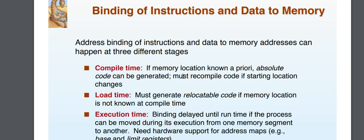To understand absolute code, we look at machine level language and memory location. Once we start the process of our program, we may need to recompile the machine level language. When you compile a C program, it is converted to machine language — our system's symbolic language becomes 0s and 1s — and this is called compile time binding.